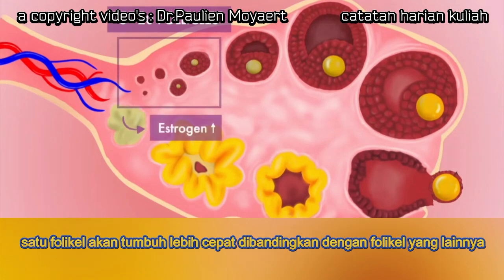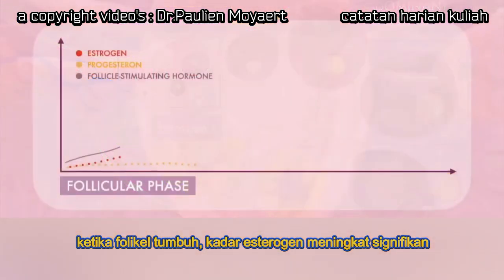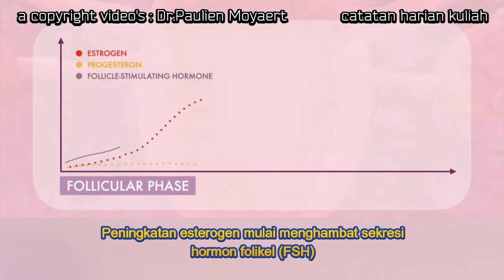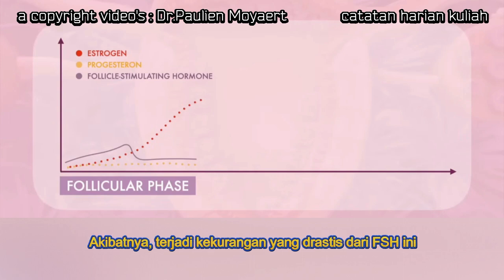One follicle will begin to grow faster than the others — this is called the dominant follicle. As the follicle grows, levels of estrogen in the blood rise significantly. This increase in estrogen begins to inhibit the secretion of follicle-stimulating hormone. The fall in follicle-stimulating hormone allows the smaller follicles to die off, as they are in effect starved of follicle-stimulating hormone.